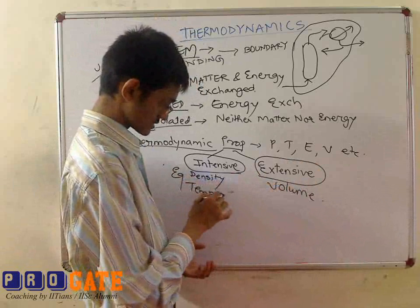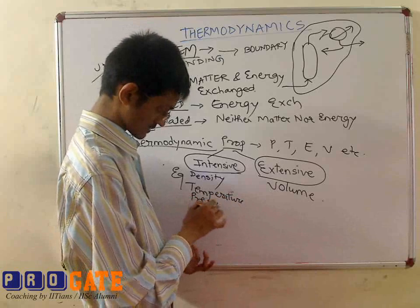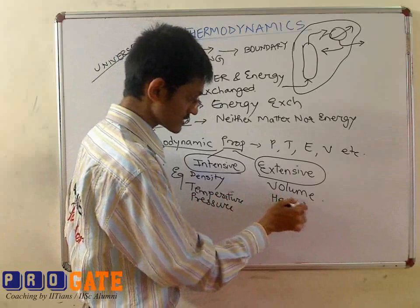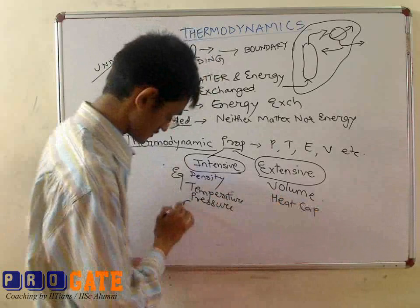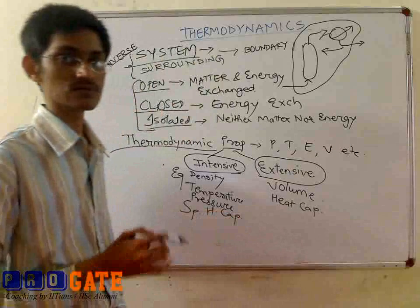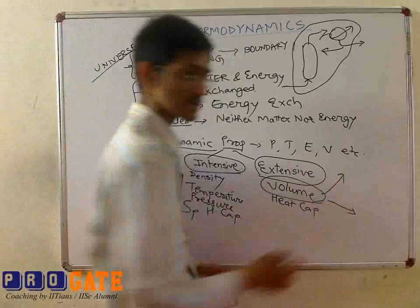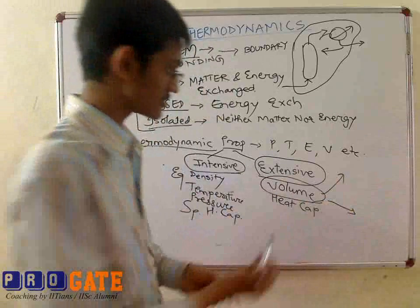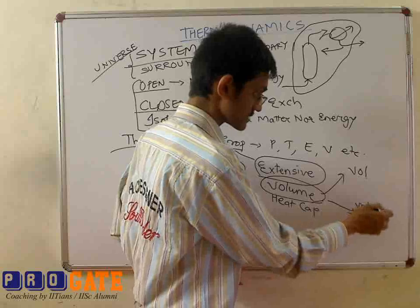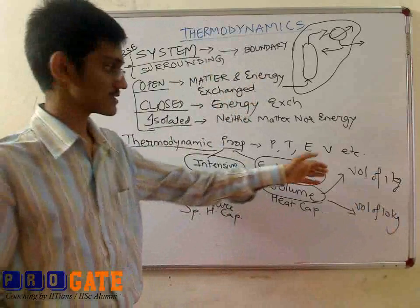Other examples: temperature comes under intensive, pressure also comes under intensive. Heat capacity would be extensive. Specific heat capacity would be intensive. The way to classify intensive versus extensive — if you take any property, just see whether its value changes if you change the mass of the system. Volume of 1 kg of water versus volume of 10 kg of water — would they be the same? No. So volume is an extensive property.